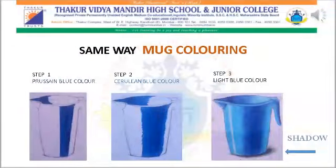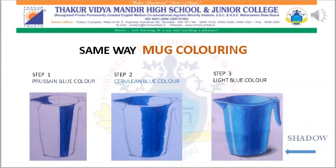In the same way, you have to color the mug object. For that, select Persian blue, Cerulean blue, Light blue, and Ultramarine blue. Finally, show the shadows of that object so that the entire picture will stand out.